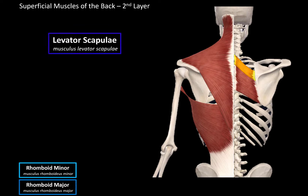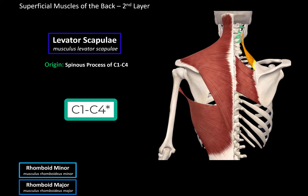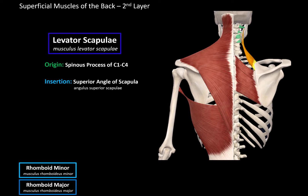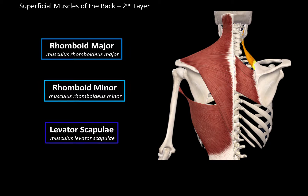Then there's the levator scapula, this one. It originates from the spinous processes of C1 to C6, and inserts at the superior angle of the scapula. Its function is to elevate the scapula. And that was the second layer of the superficial muscles of the back.